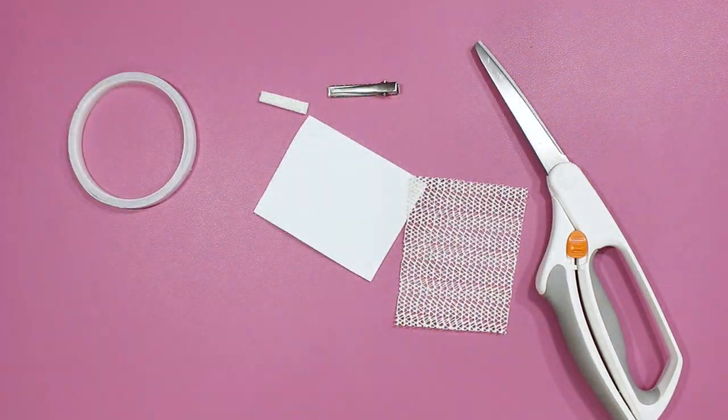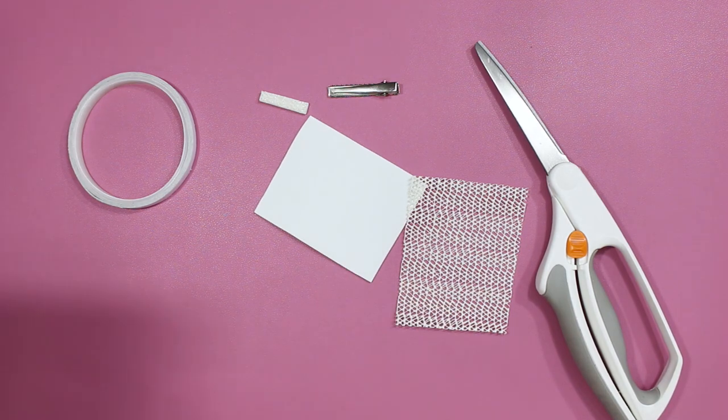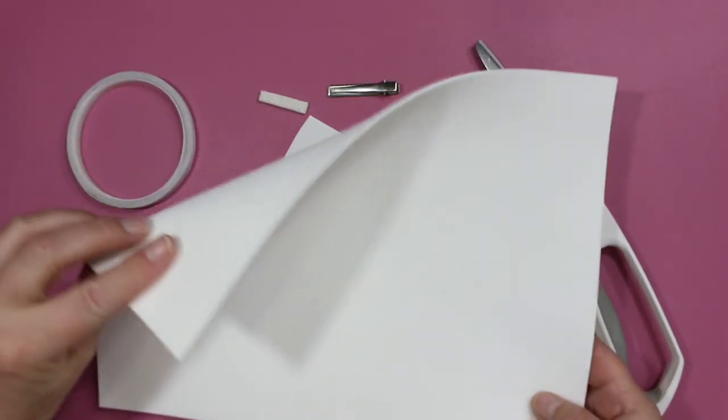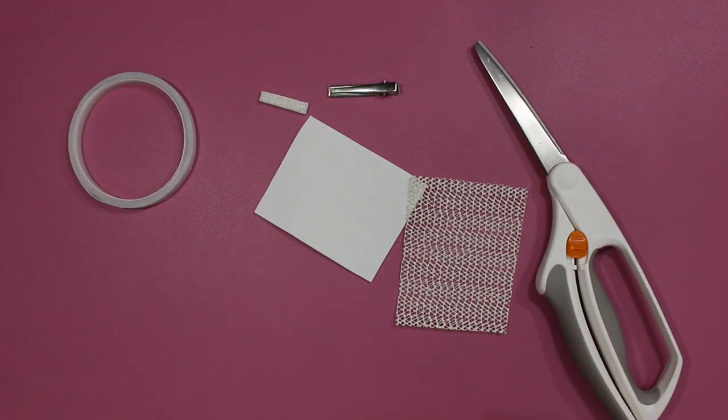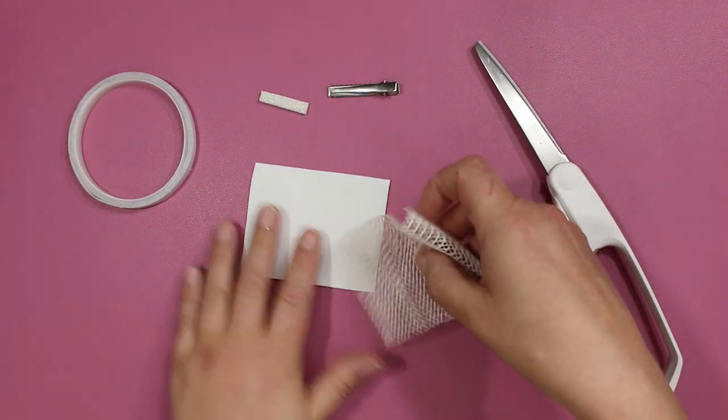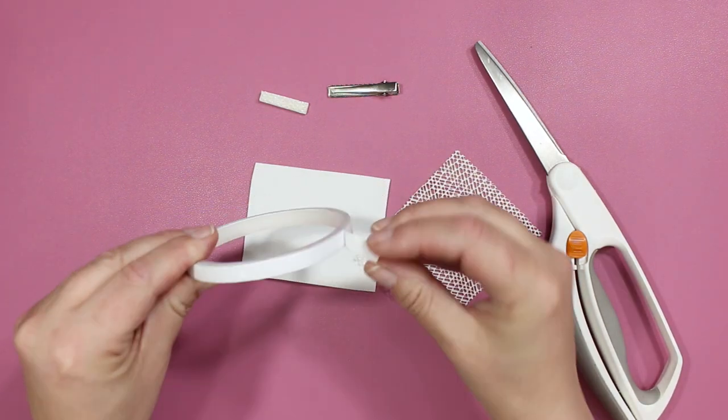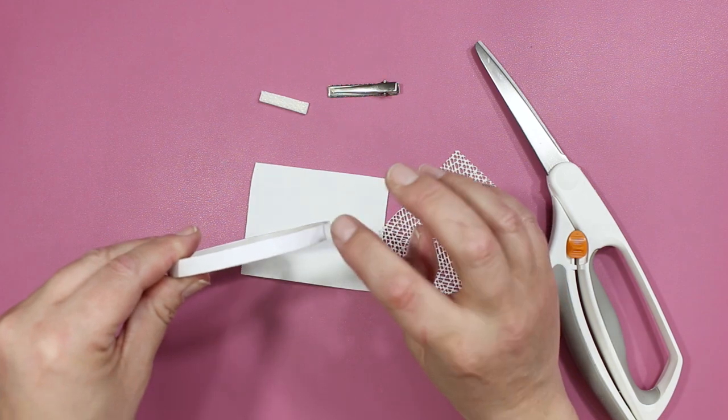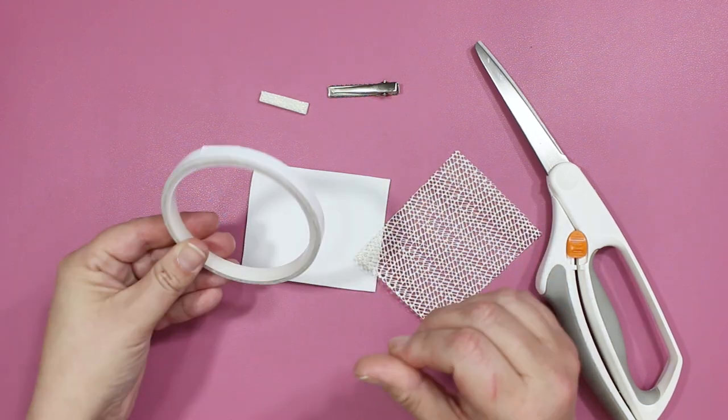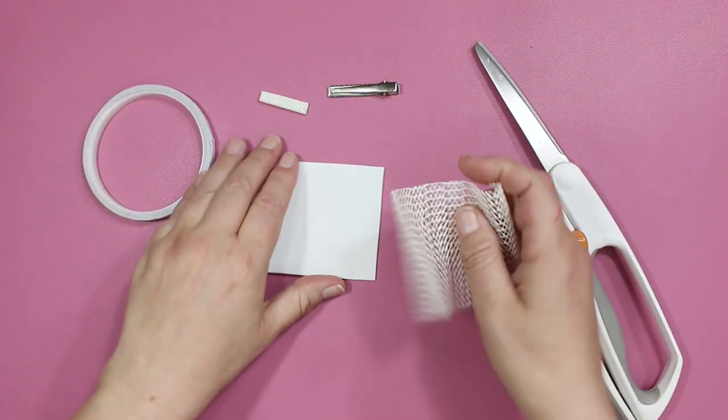And then I also have this foam sheet that I got from Walmart. It's two millimeter thick and they're only like 35 cents I think. Then you're also going to need double-sided sticky tape. I got this at the Dollar Tree and it works really well for what we need it for.